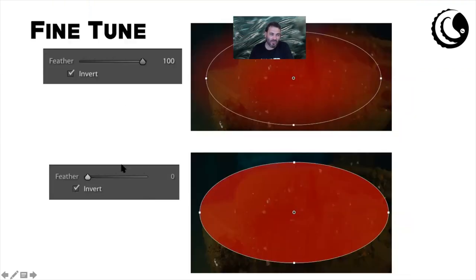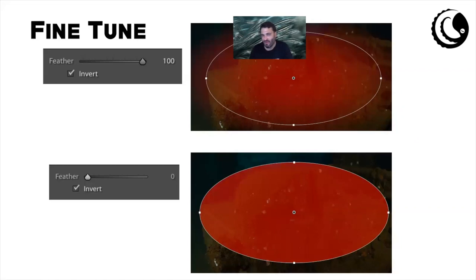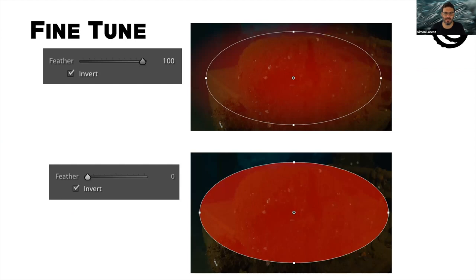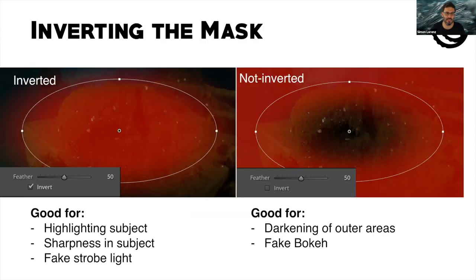There's also a feather on the radial filter. A feather of 100 percent means the effect spreads from the center to the outside — actually a little bit outside of the circle with the radial filter. If you put it to zero it makes a hard circular adjustment, but you never want to use that because it looks unnatural. Next thing: inverting the mask — when you tick 'Invert' you get the mask inside the circle; when you untick it, the mask is everywhere outside the circle.